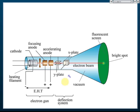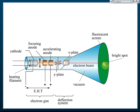The second component is the deflecting system, which has two pairs of plates: the Y plates and the X plates. The Y plates move the cathode ray up and down, and the X plates move it left and right. The third component is the fluorescent screen, which absorbs a small amount of light energy released when electrons hit the screen and produces a large amount of light to create a bright spot.